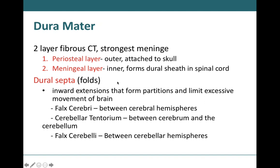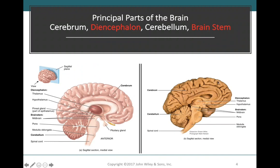These dural septa are invaginations of the dura mater folding into the spaces between different lobes of the brain, partitioning them apart and helping to keep the brain secure within the cranial cavity. We have three specific dural septa: the falx cerebri, the cerebellar tentorium, and the falx cerebelli. The brain is separated into two halves called hemispheres — here we're looking at a sagittal section showing the left cerebrum.